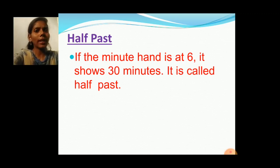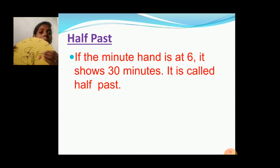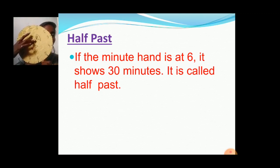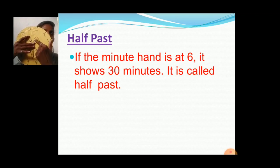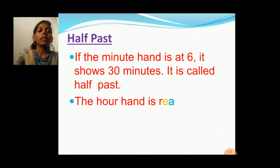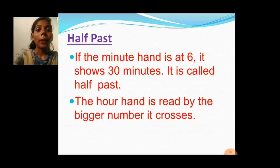And how to read the hour hand? The hour hand is read by the number it crosses. If the hour hand is at 1, it crosses number 1, and the minute hand is at 6. So it is half past 1, because the hour hand crosses number 1. It is half past 1 or 1 hour 30 minutes. The hour hand is read by the bigger number it crosses.